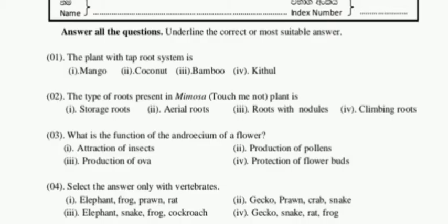The next question: the type of roots present in the mimosa — touch-me-not — plant. The options are: storage roots, aerial roots, roots with nodules, and climbing roots. We know that only pulse-type plants have nodules. Mimosa, beans, cowpea, and tamarind are examples of nodule plants.